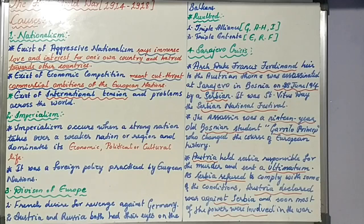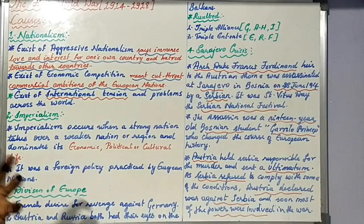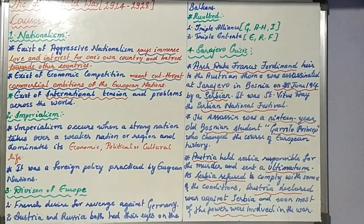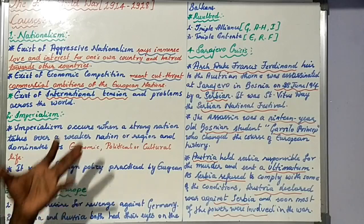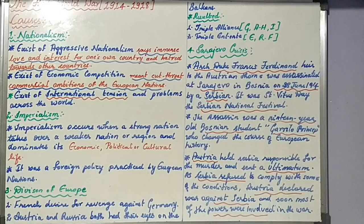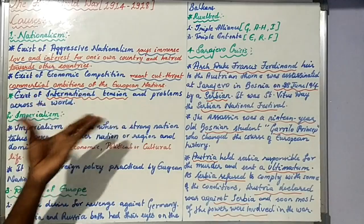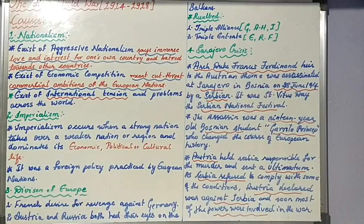Let us start with the first topic of Contemporary World — the First World War. We had two World Wars: the First World War from 1914 to 1918, and the Second World War from 1940 to 1945, with Fascism and Nazism formations in between. This is a very vast and interesting topic, but since the syllabus has been reduced this year, we are talking about only two concepts: causes and results.